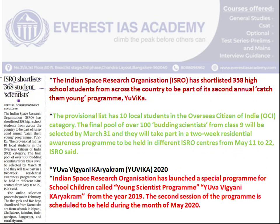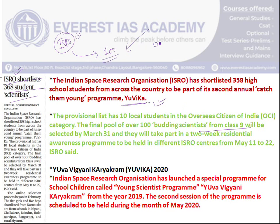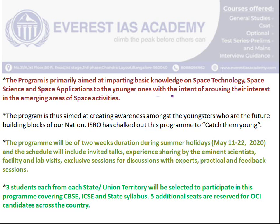The next article is: ISRO shortlists 368 student scientists. This article discusses the UVIKA program, very important for the UPSC Preliminary examination and KIS examination. Under this scheme, ISRO targets school students from Class 9 onwards, selecting around 100 students including some Overseas Citizens of India. It is an intensive residential training program held at the ISRO office for two weeks, where selected students interact with guest lecturers, experts, and scientists who share their experiences.